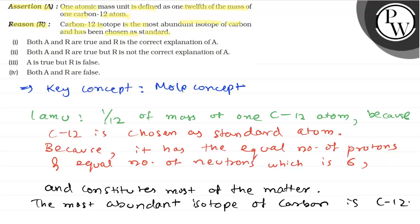Therefore, both assertion and reason are true, and the reason is the correct explanation for the assertion. Both A and R are true, and R is the correct explanation of A, which is the correct answer.